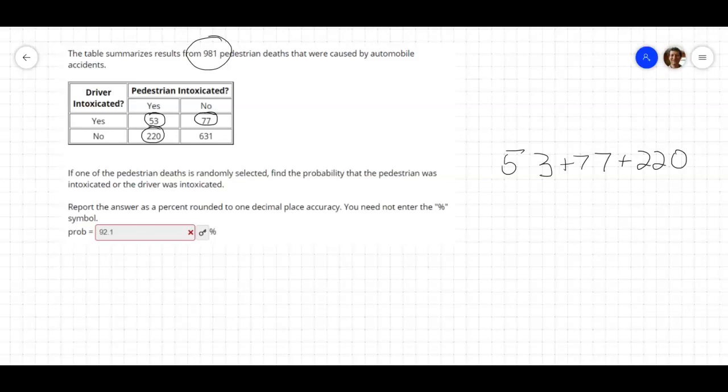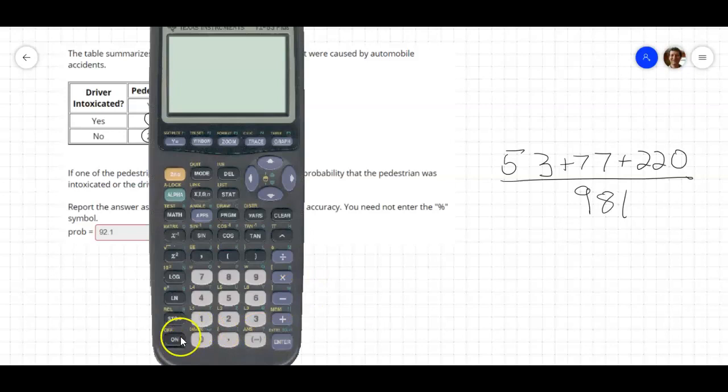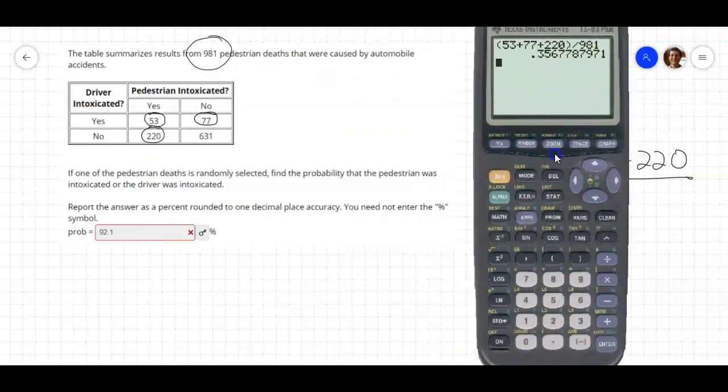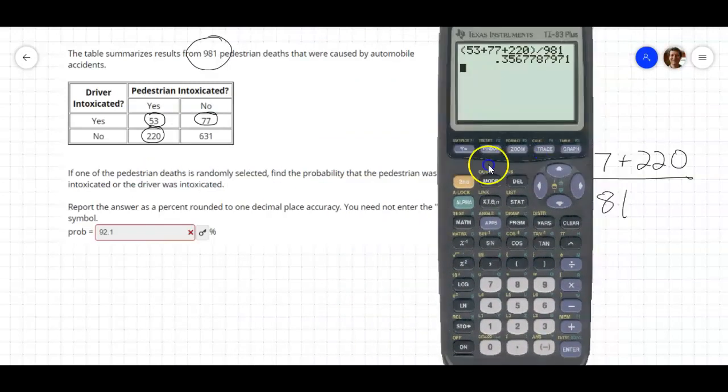Divided by the total 981. So let's take a look. The numerator: 53 plus 77 plus 220 divided by the denominator 981. That's 0.3568. We want one decimal percent, so 35.7%.